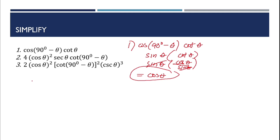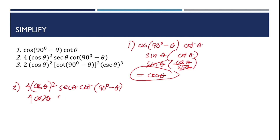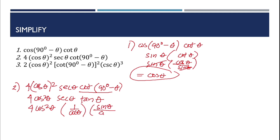Number 2: 4 cosine squared theta times secant theta times cotangent of 90 degrees minus theta. Cotangent of 90 degrees minus theta equals tangent theta. Secant theta equals 1 over cosine theta, and tangent theta equals sine theta over cosine theta. So we have 4 cosine squared theta times 1 over cosine theta times sine theta over cosine theta. The cosine squared cancels, leaving 4 sine theta as the result.